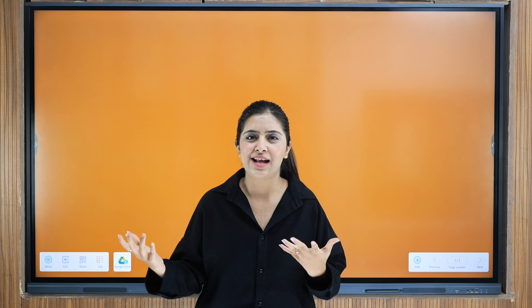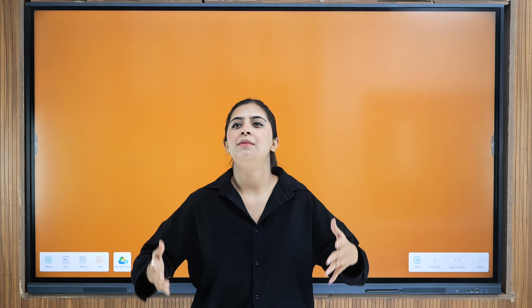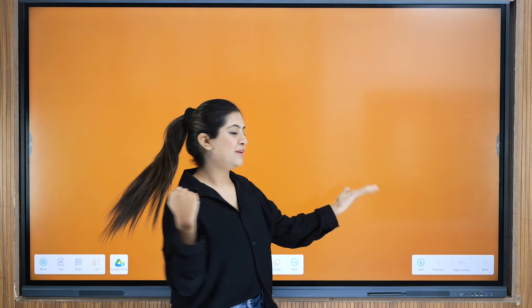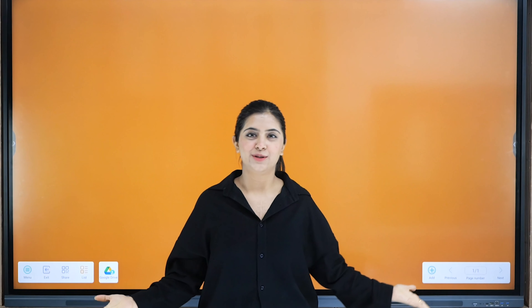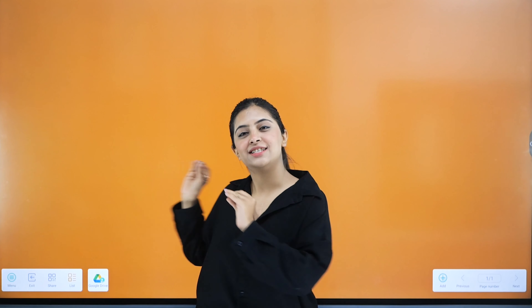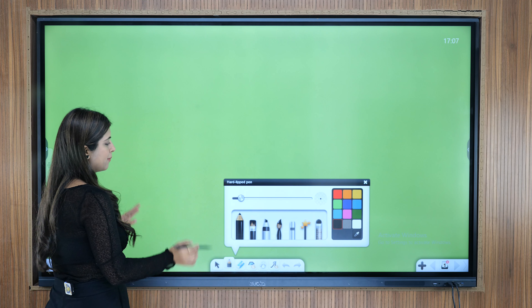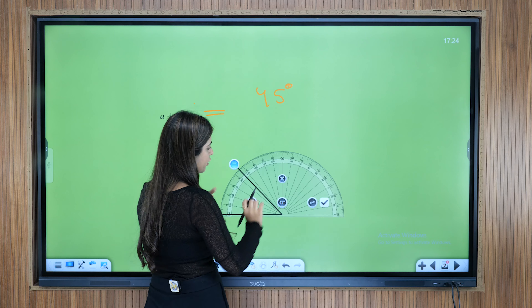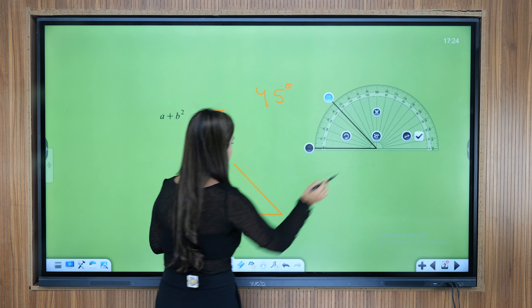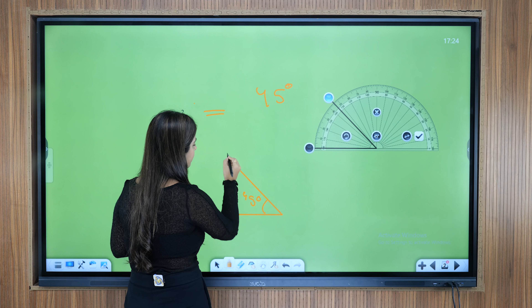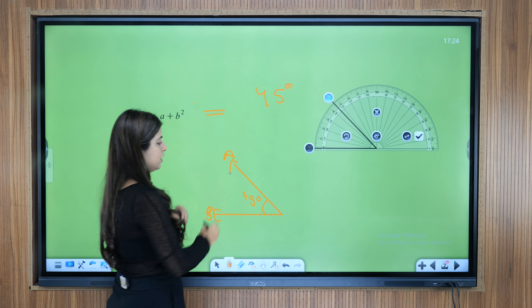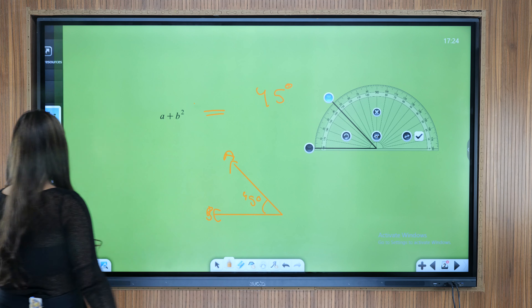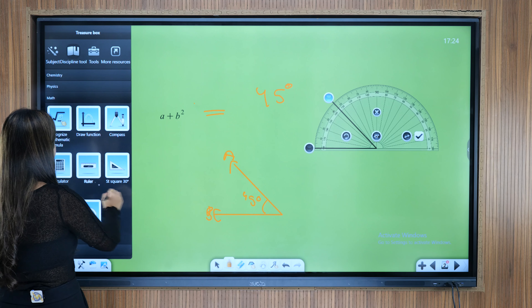Let's now quickly understand what makes up a DIRT teaching studio setup. First, the digital panel — this interactive flat panel is your hero. It allows you to write, draw, and annotate directly on the screen, making lessons dynamic as well as collaborative.